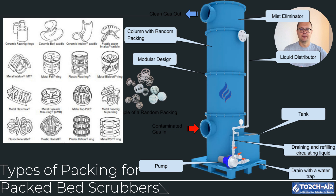Pall rings: these are an upgrade from Raschig rings, designed with more open structures to improve gas and liquid flow. They provide a higher surface area while keeping the pressure drop low — that's why they're so popular. They offer better efficiency without adding too much resistance, and are made from polypropylene, metal, or ceramic, so they can handle a variety of industrial conditions.